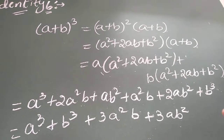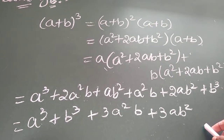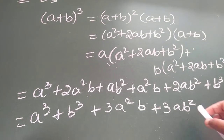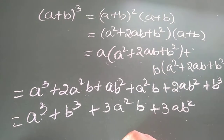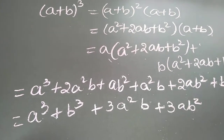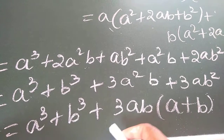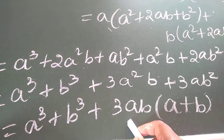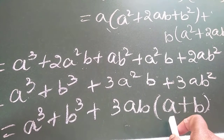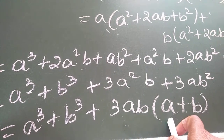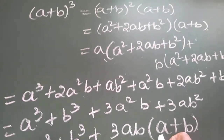This is the solution for identity number 6. It can also be written by taking 3ab as a common factor, leaving the bracket a plus b inside. So: a plus b whole cube equals a cube plus b cube plus 3ab into a plus b. You can take a screenshot and write this down in your notes.